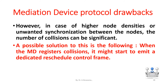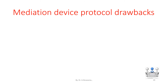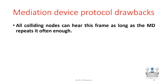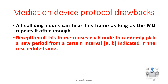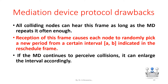A possible solution to this is the following: when the mediation device MD registers a collision, it might start to emit a dedicated reschedule control frame. All colliding nodes can hear this frame as long as the MD repeats it often enough. Reception of this frame causes each node to randomly pick a new period from a certain interval. If the MD continues to perceive collisions, it can enlarge the interval accordingly.